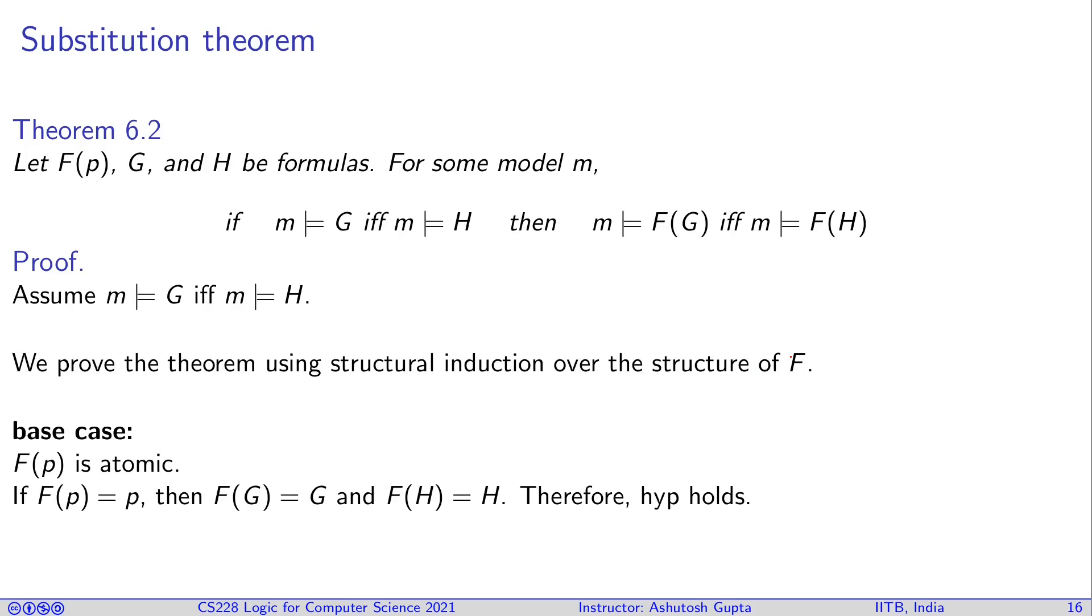The base case is that F(p) is atomic. If it is a variable, then that variable p gets replaced by G. So you get F(G) is just G and F(H) is just H. Our assumption is that the behavior is exactly the same with respect to m, therefore the right-hand side holds.